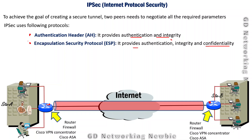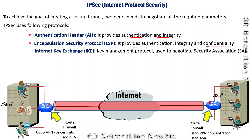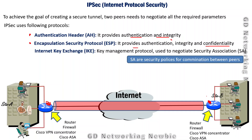These are the two encapsulation protocols defined in the IPSec framework. The third component is Internet Key Exchange (IKE). IKE is a key management protocol used to negotiate the security association between two points — for example, between the two routers which are our peers. They will exchange the security association using the IKE protocol. Security associations are basically security policies for communication between peers.